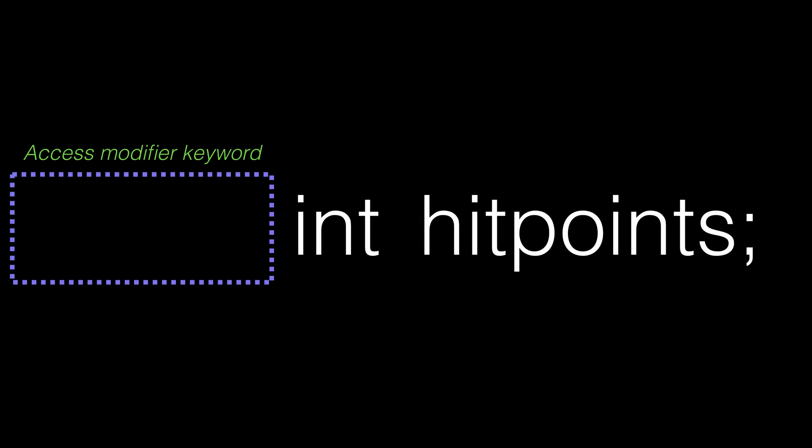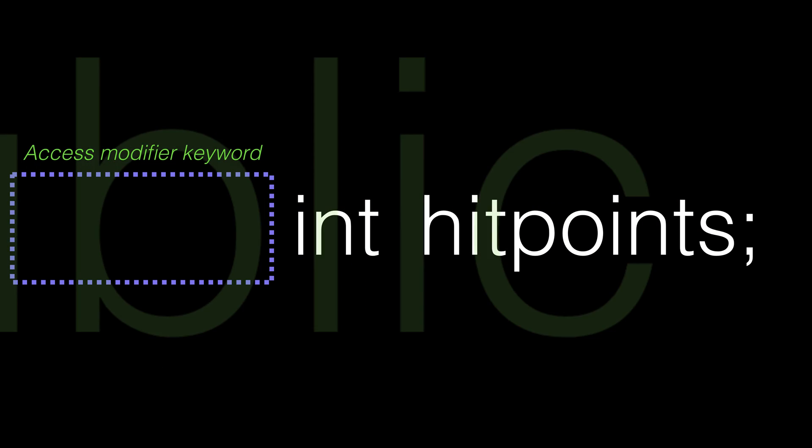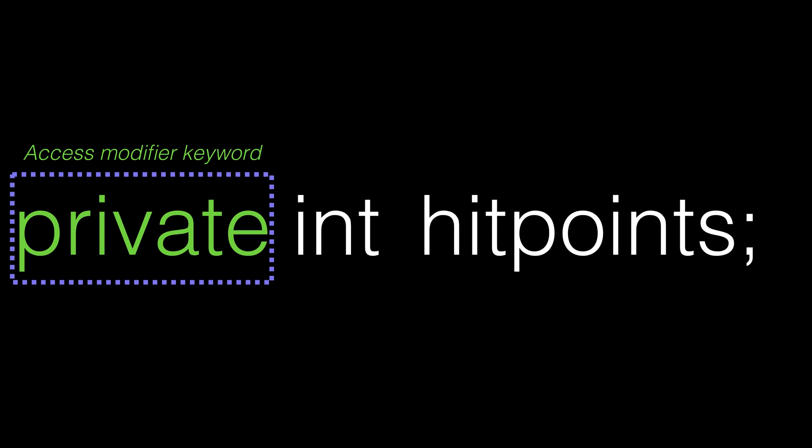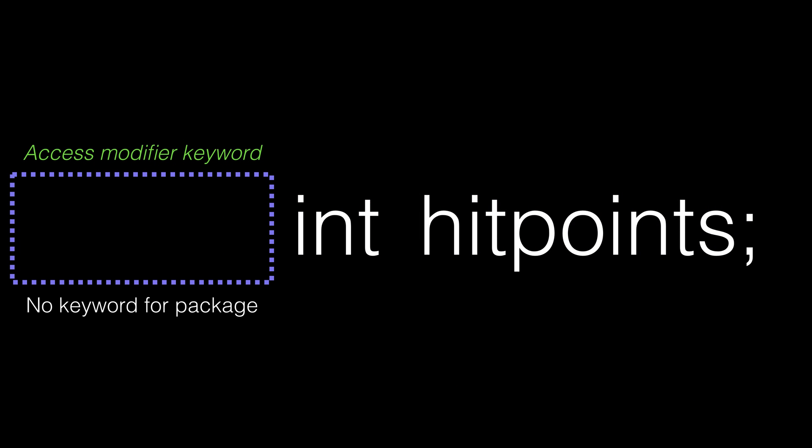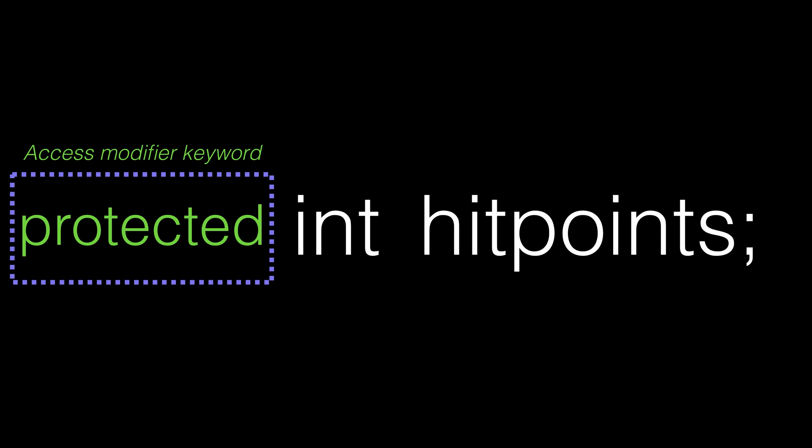When we define methods or attributes, we can specify how they're accessed using an access modifier. Access modifiers are placed before the thing you want to control. The access modifier keywords are public, private, package, and protected.